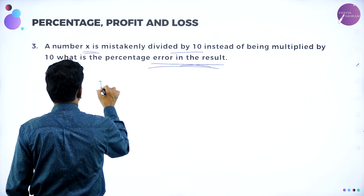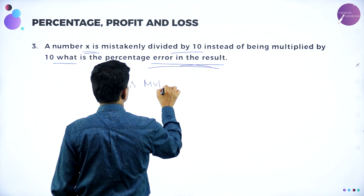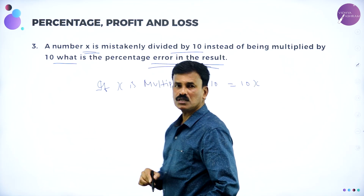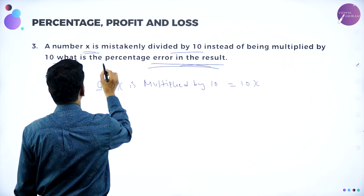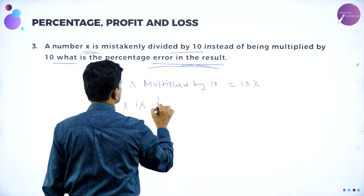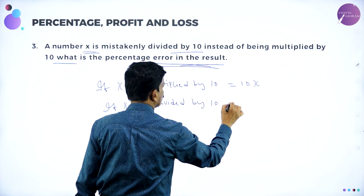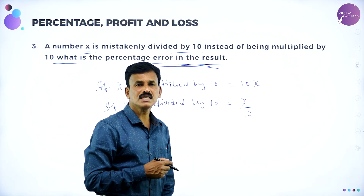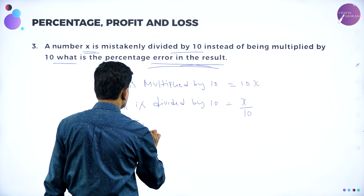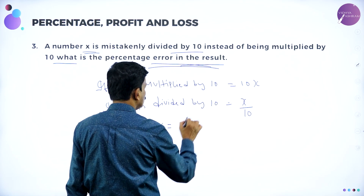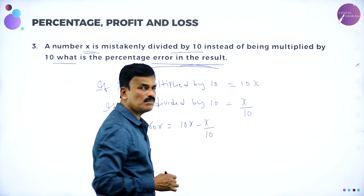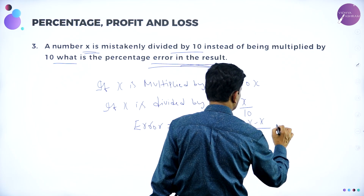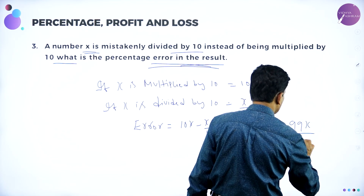The difference between these two gives the error. So error is equal to 10x minus x divided by 10. Taking LCM of 10: that is 100x minus x divided by 10, which is 99x divided by 10. That is the error.